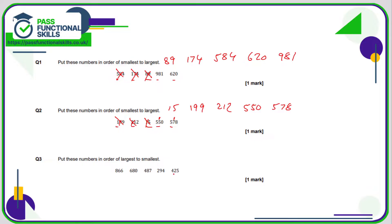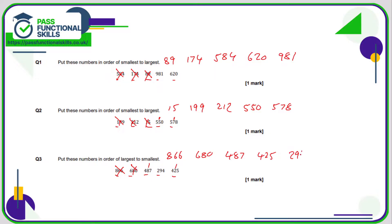Question 3: they're all three-digit numbers, so the largest is going to be the one with the largest first digit. We've got 8, 6, 4, 2, 4 — so 8 is bigger than all others, and 866 is the largest. 6 is bigger than 4, 2, and 4, so 680 comes next. We've got two numbers beginning with 4, so we look at the second digit — 8 versus 2. 8 is bigger than 2, so 487 comes next, followed by 425, and finally 294.